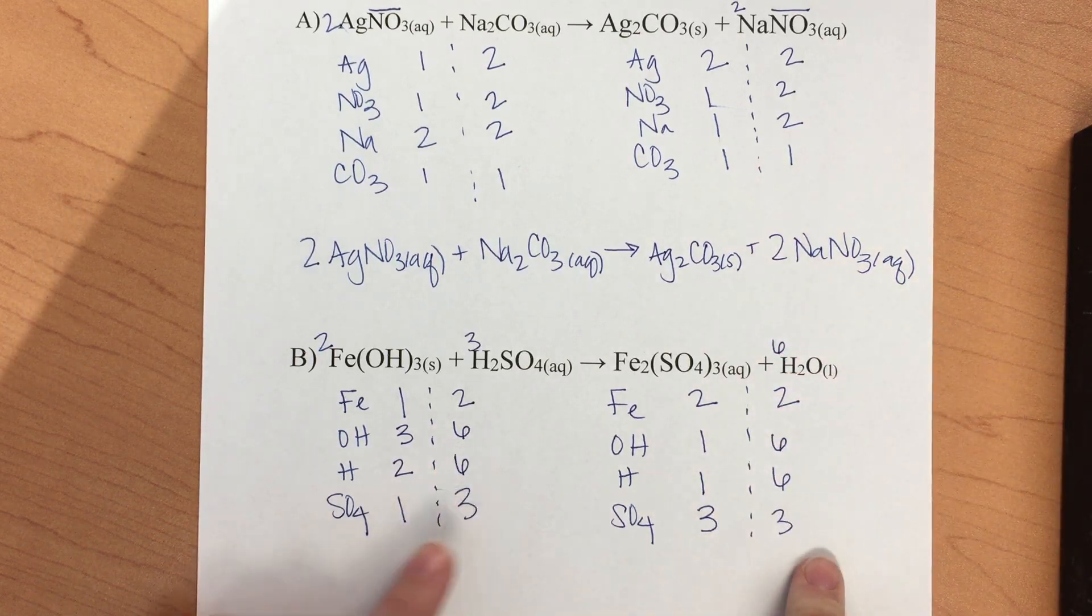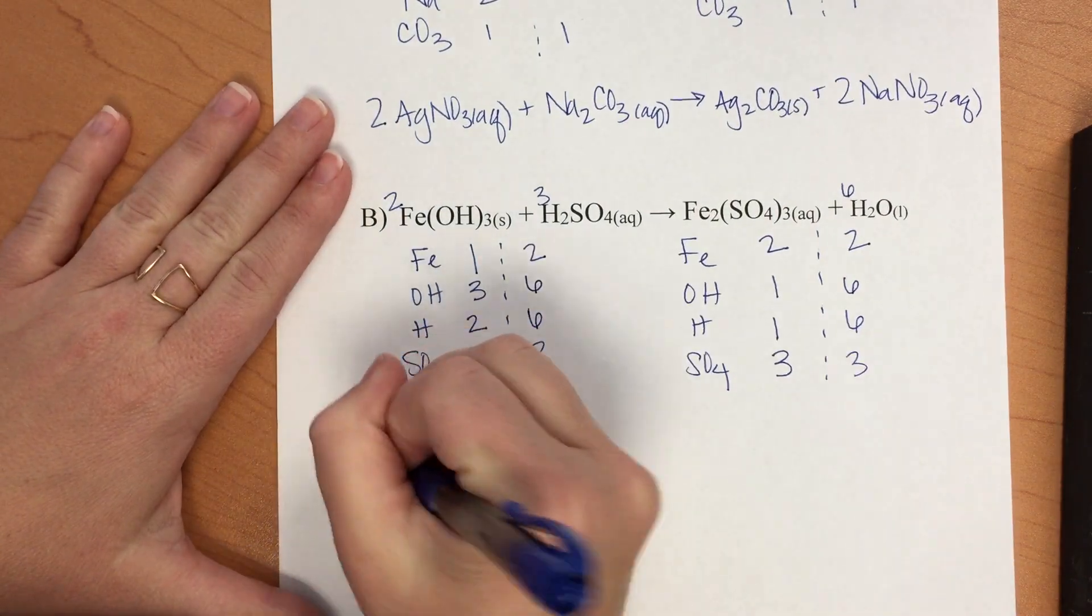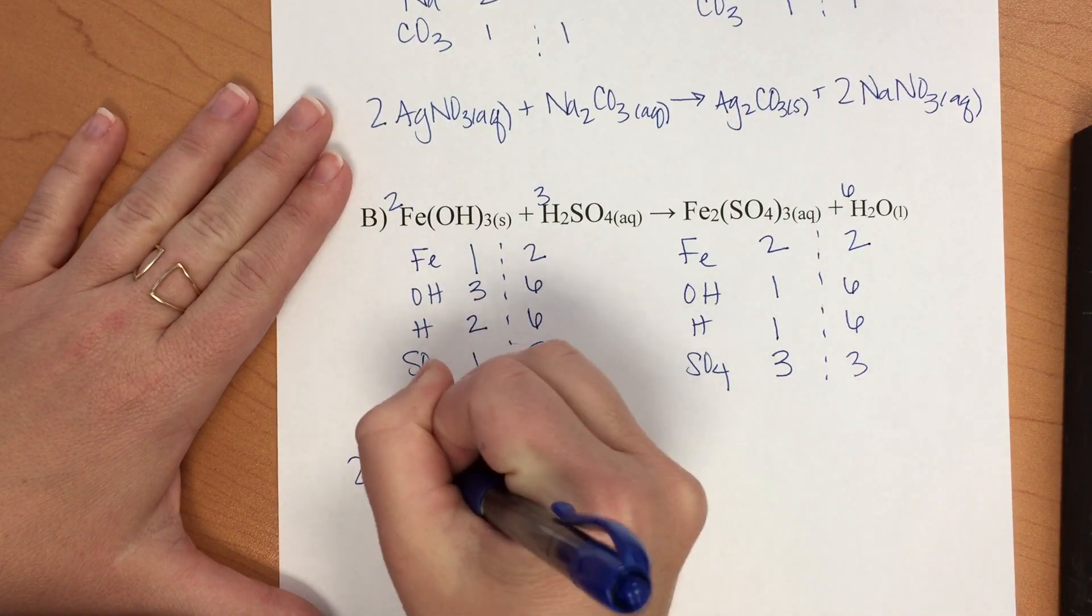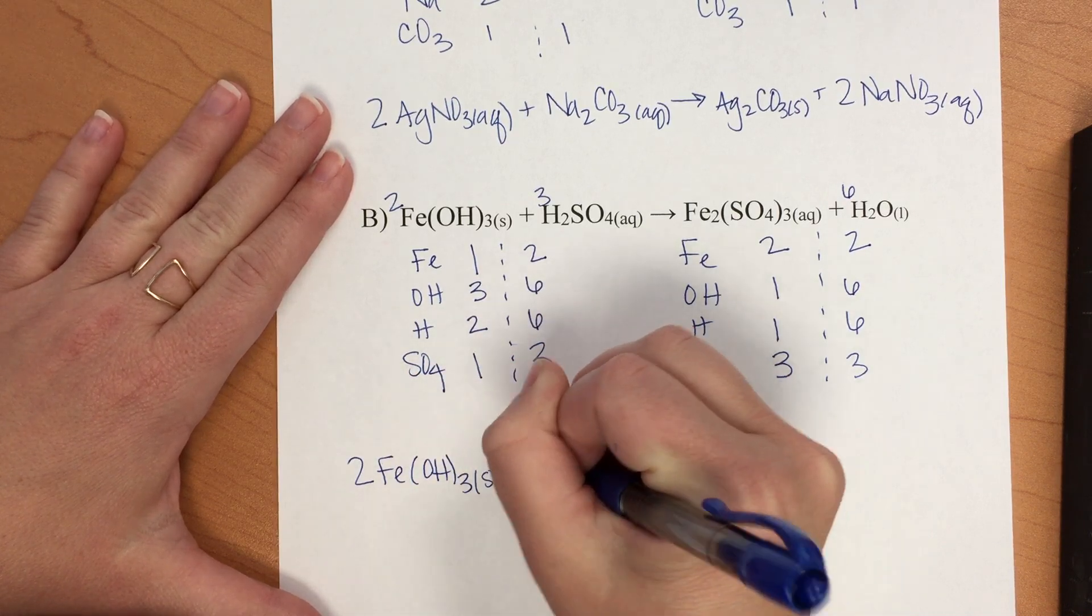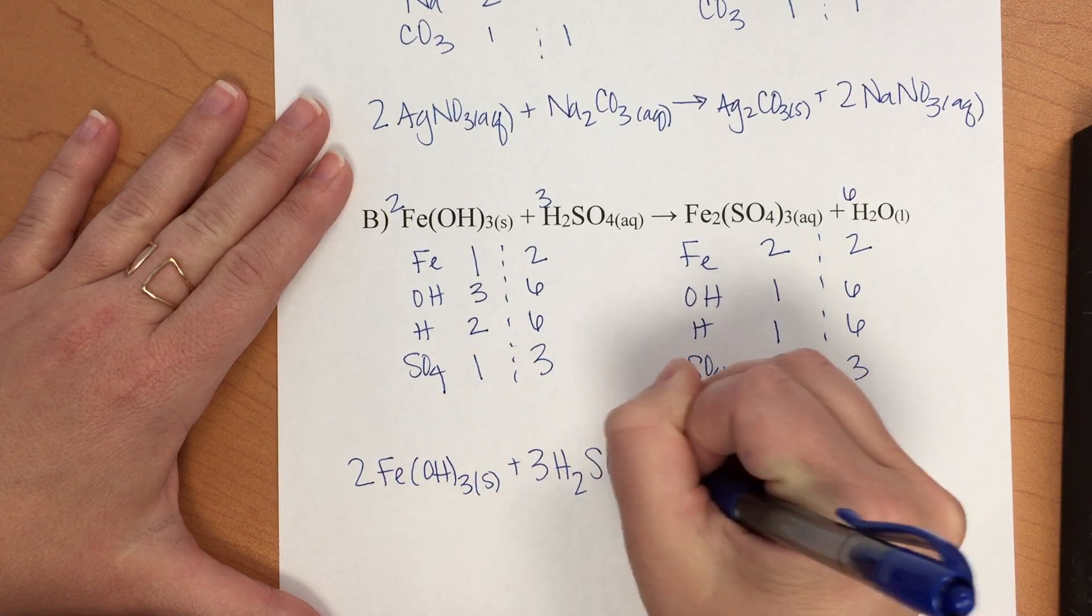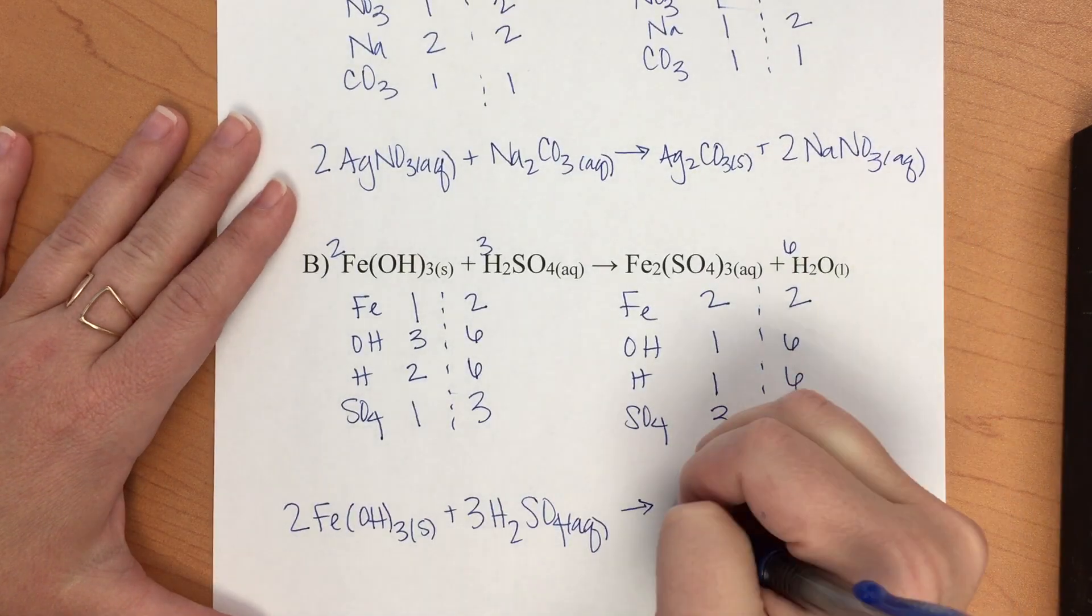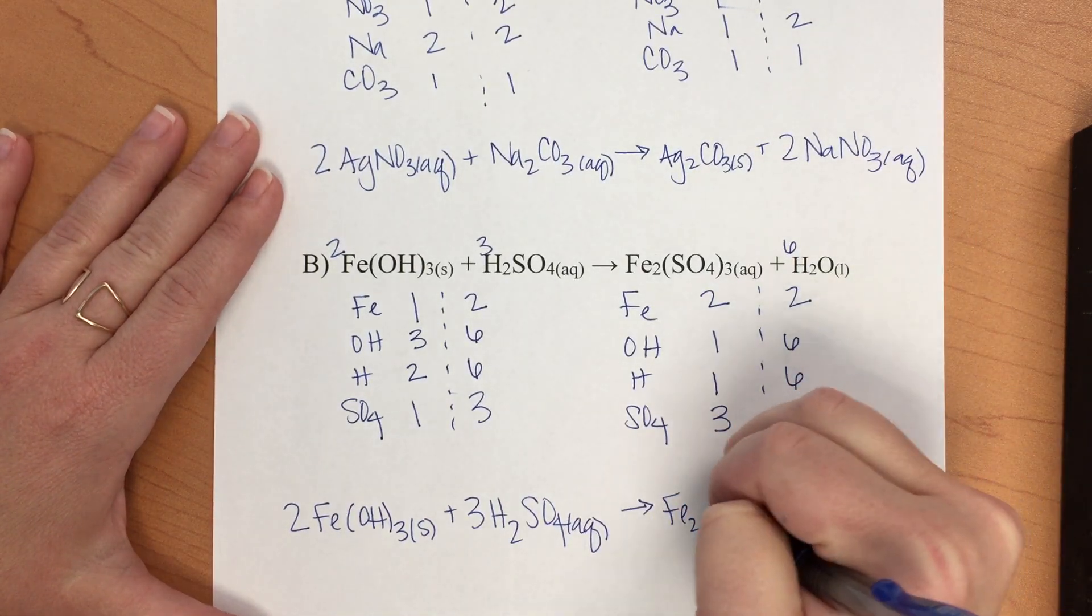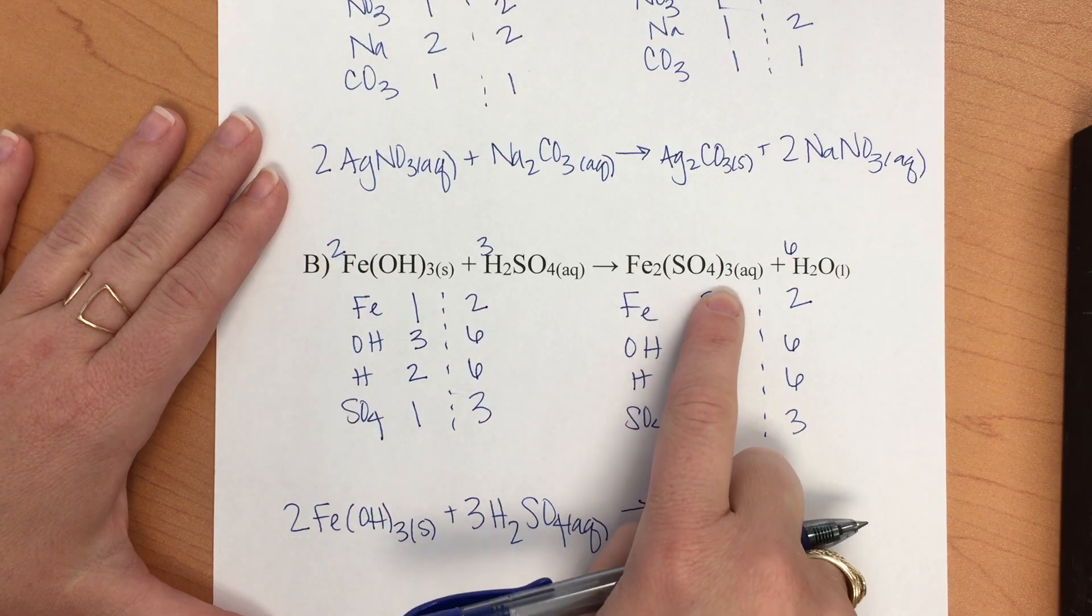Let's go ahead and rewrite that. Make sure you include your states for each of these—the aqueous and the solids. Don't forget that the parentheses here indicate that there are two irons and there are three sulfate molecules.